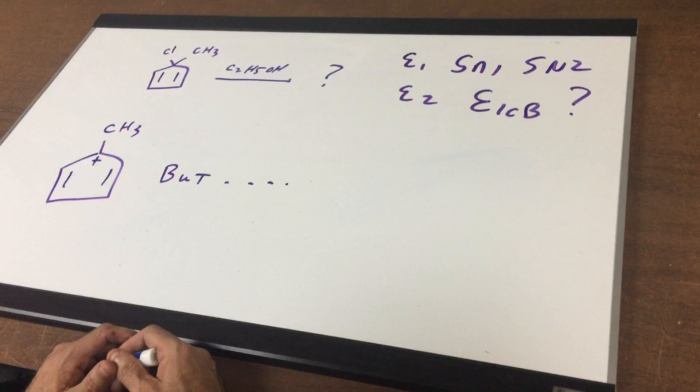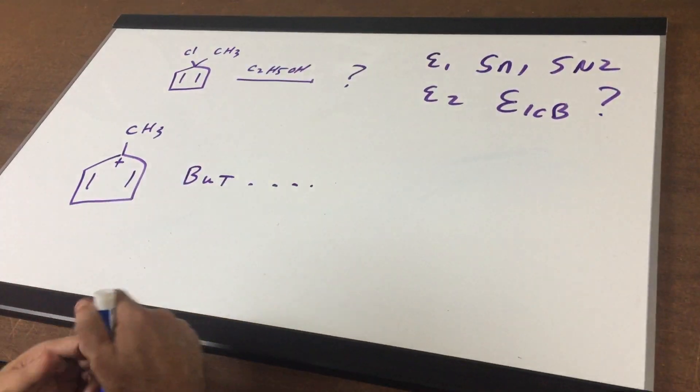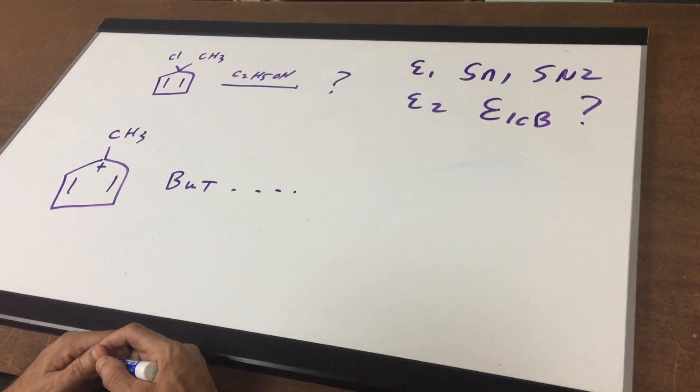And in an SN1, we first form, if you remember, a carbocation in the slow step. And notice we have a tertiary carbocation.